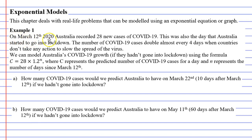On March 12, 2020, Australia recorded 28 new cases of COVID-19. This was also the day that Australia started to go into lockdown. The number of COVID-19 cases doubled almost every four days when countries don't take any action to slow the spread of the virus. I went and looked at some of the statistics and attempted to model the COVID-19 growth using a formula, where C represents the predicted number of COVID-19 cases for a day and N represents the number of days since March 12th.